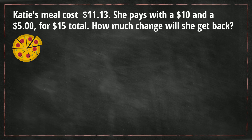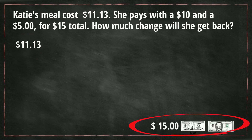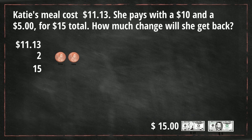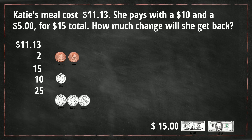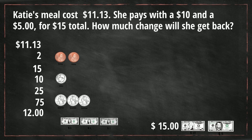Well, let's count up to $15. We're going to start at $11.13 and give Katie back two pennies — that's $11.15. Then we're going to give her a dime, that gets her to $11.25, and then we're going to give her three quarters — that's $0.75 — and that gets her to $12. Then we'll give her three $1 bills: $12, $13, $14, $15.